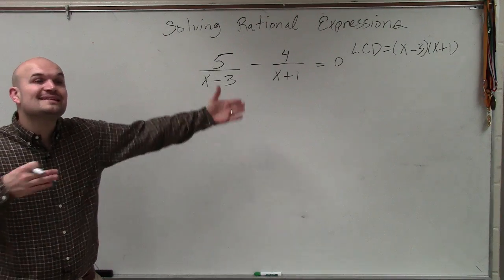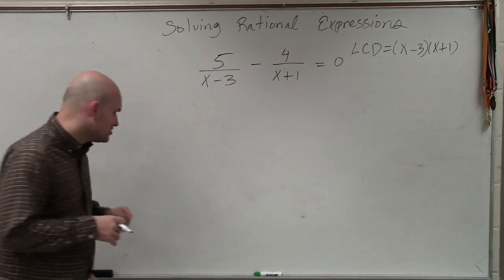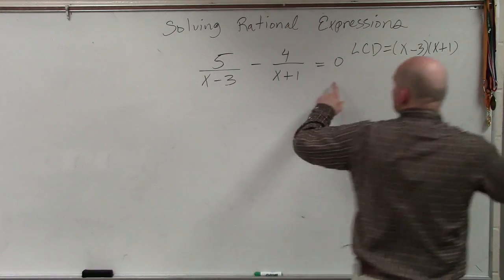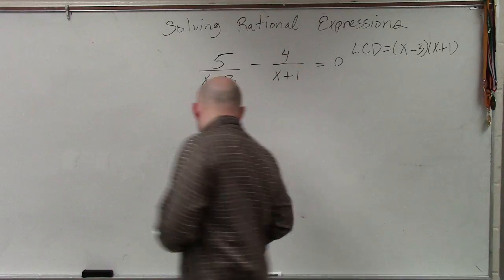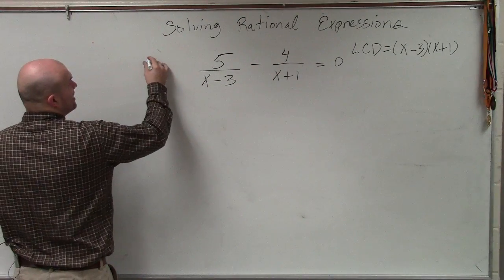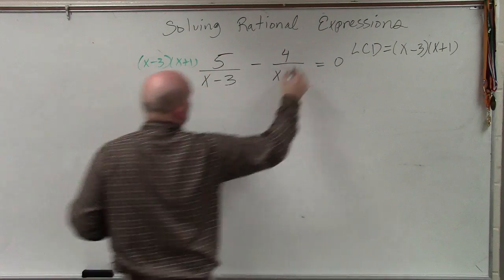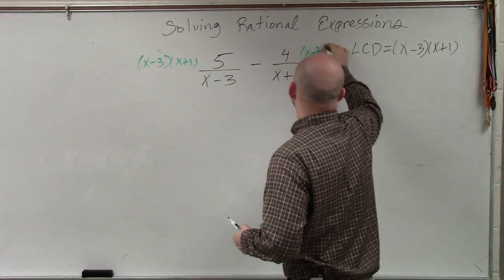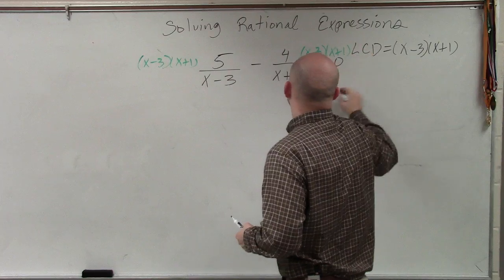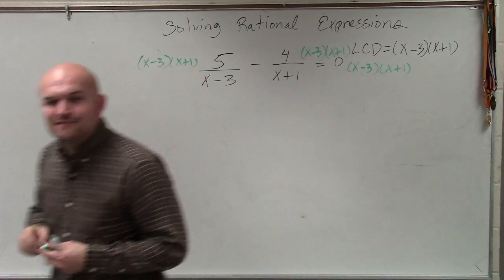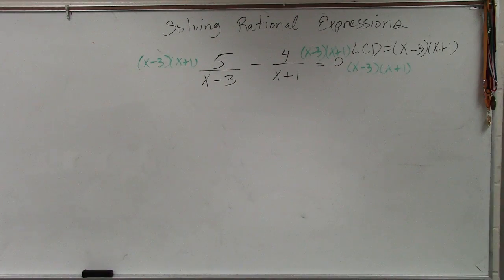So now, just like I did last example, we're going to multiply everything by, and let me go through the case again. So let's multiply everything by the common multiple. So I have x minus 3 times x plus 1, x minus 3 times x plus 1, x minus 3 times x plus 1. So now I multiply every single term by my LCD.